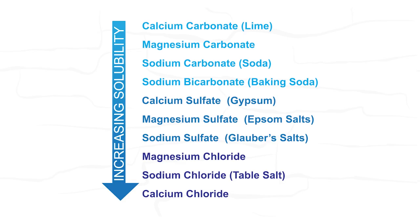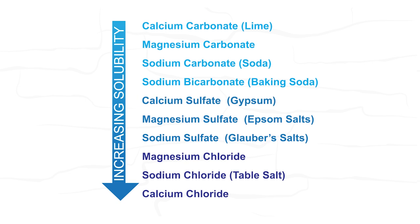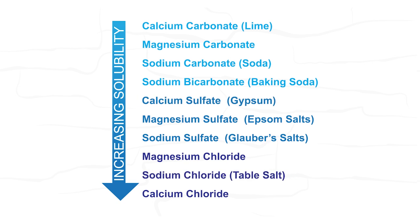Each salt compound has a different level of solubility. Solubility is key for understanding issues with salinity. Carbonate-based salts, such as lime, are relatively insoluble compared to other salts like gypsum, which are sulfate based, and chloride salts like table salt. These easily dissolve in water.